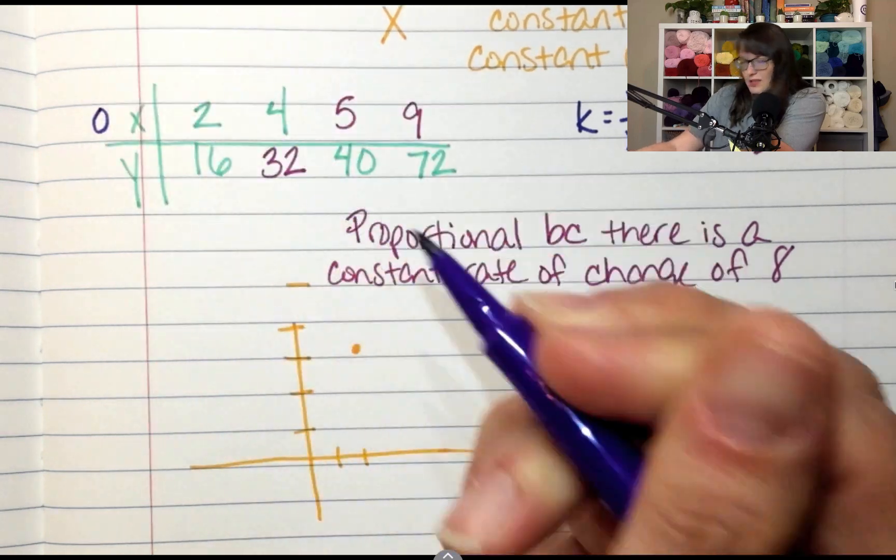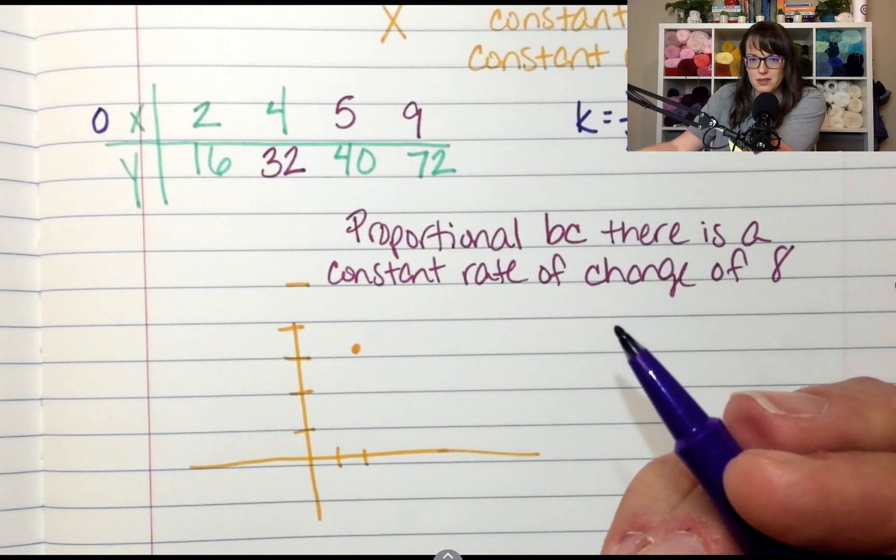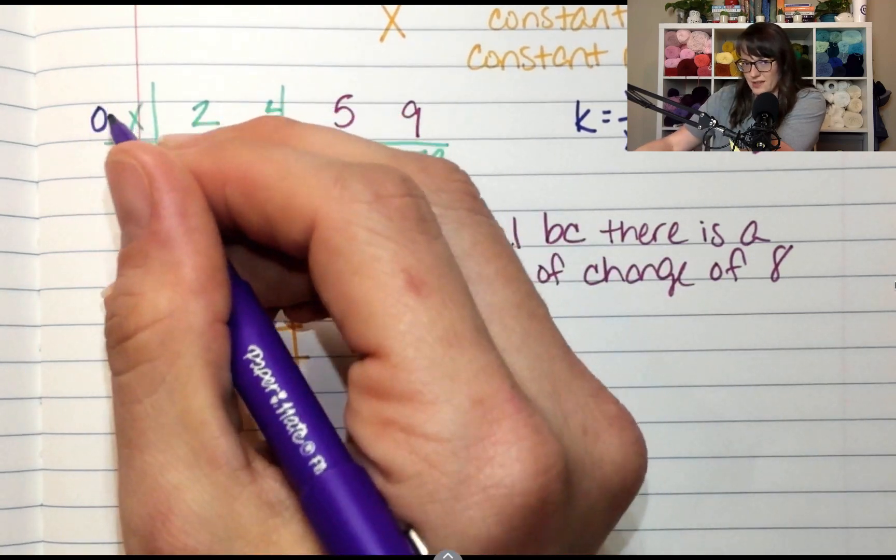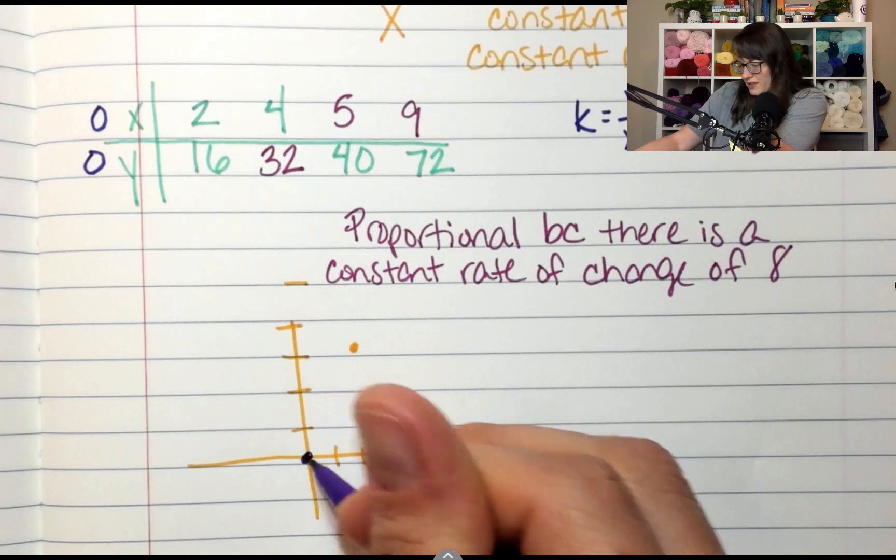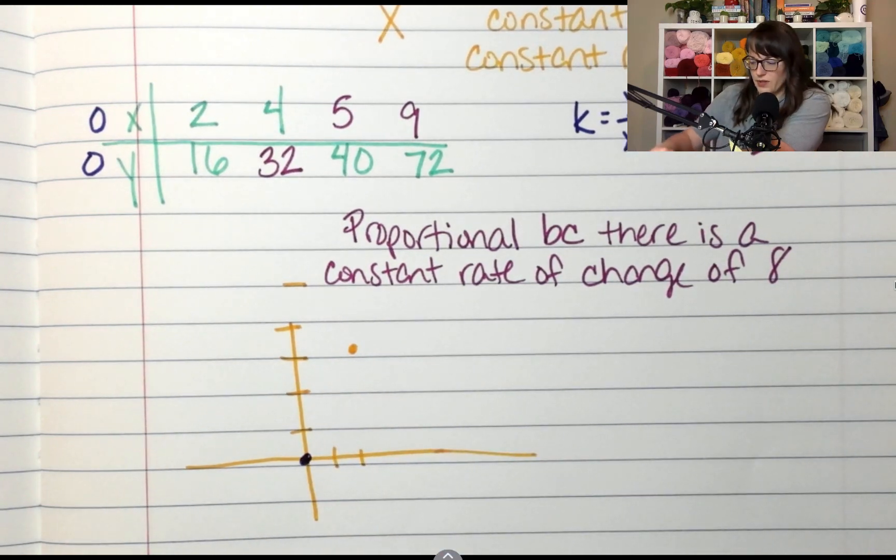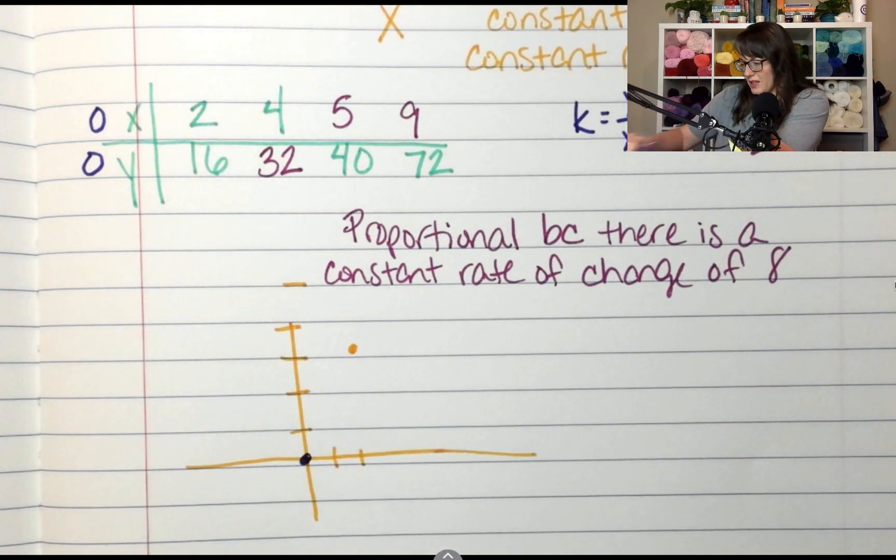I'm out of room. If x was 0, how much would y be? 0, because 0 times 8 is 0. So it would start here. So 0, 0, and then it would go to 2, 16. So your line is going to look like this.